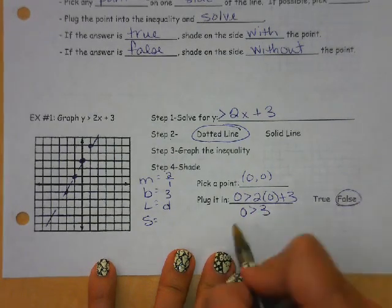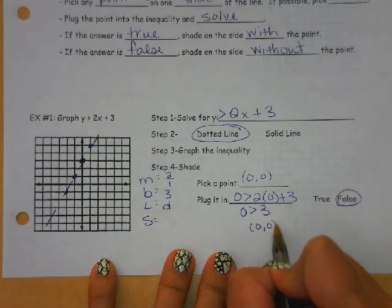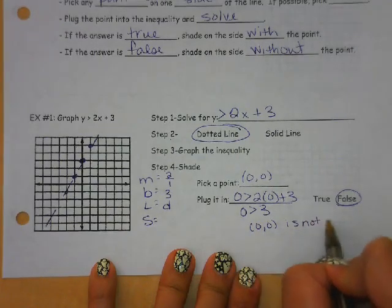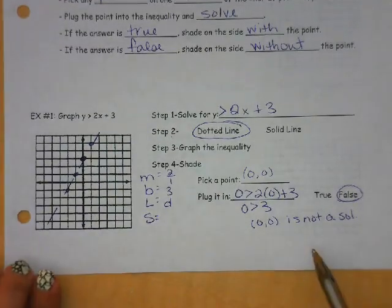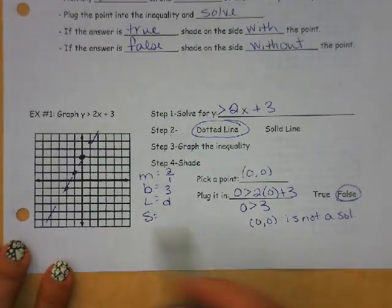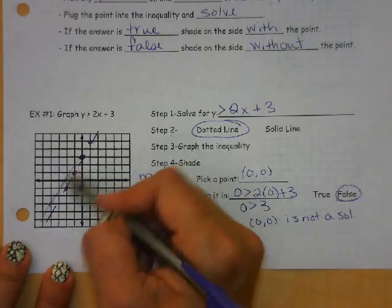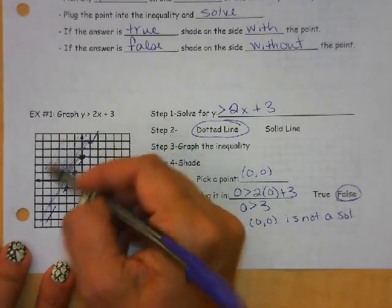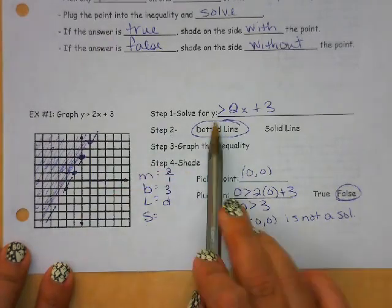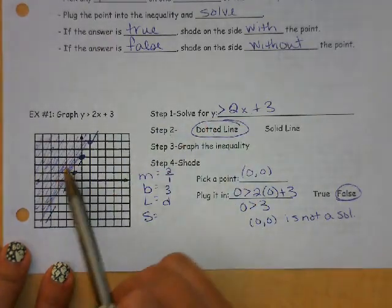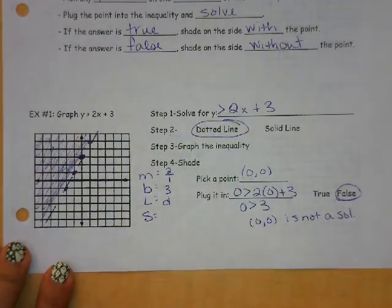That is false. So that means that the origin is not a solution. So that means we are not going to shade on the side where the origin is. So we're going to shade up here. This shaded portion says that all of these coordinates we can plug in for x and y, and it would make this inequality true.